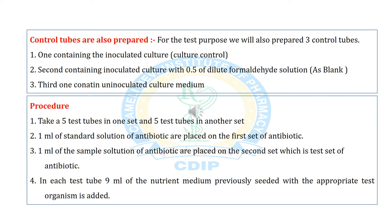Control tubes are also prepared. For test purposes, we prepare 3 control tubes: (1) containing inoculated culture as culture control, (2) containing inoculated culture with 0.5 ml of dilute formaldehyde solution as blank, and (3) uninoculated culture medium.